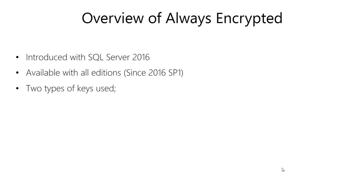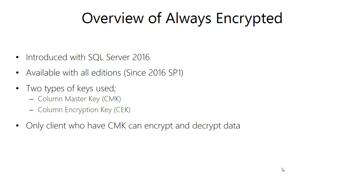There are two types of keys used for Always Encrypted. One is called Column Master Key and the other is called Column Encryption Key. Column Encryption Key is used for encrypting our data. Column Master Key is used for encrypting the Column Encryption Key, which means if somebody has the Column Master Key, that person can encrypt and decrypt data.